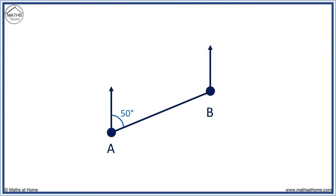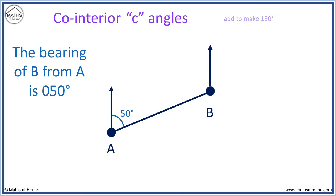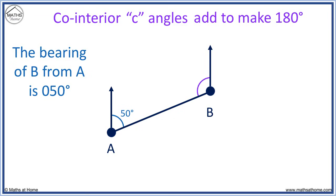050 degrees has three figures. In this example, to get to B from A we travel at 50 degrees from north. The bearing of B from A is 050 degrees. Now we will find the bearing of A from B.